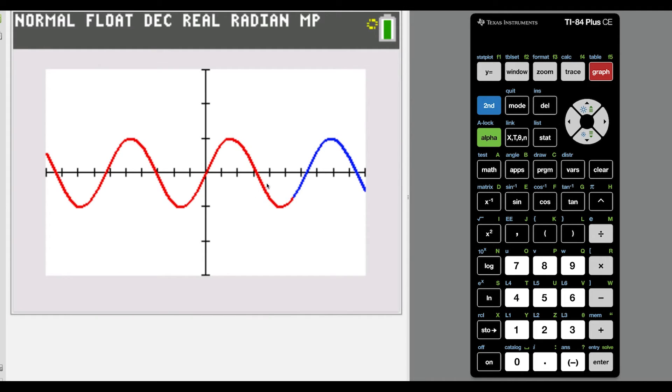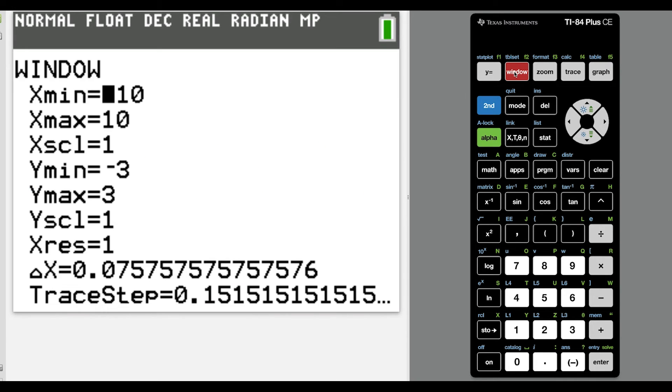But once again, highlighting this concept that Taylor polynomials approximate the function. They are most accurate at the center. But as you add more terms, they're going to do a better job of approximating the function values.